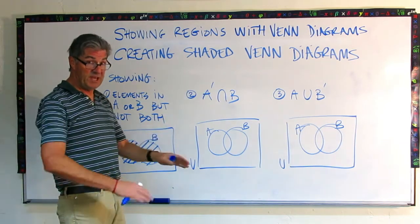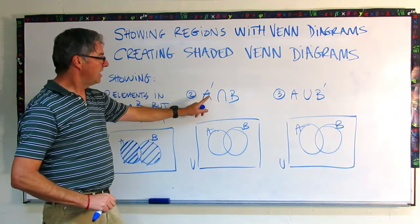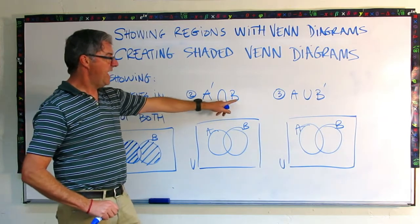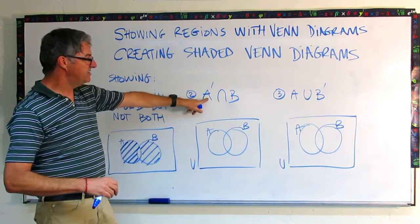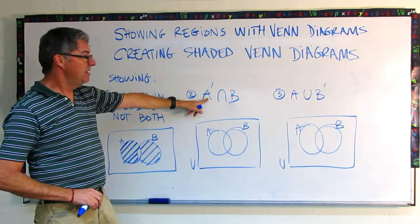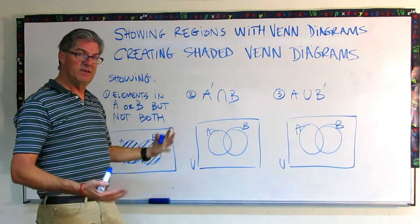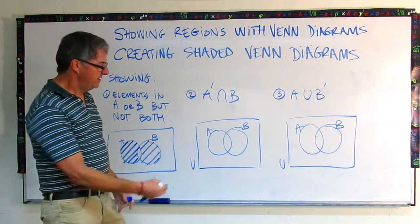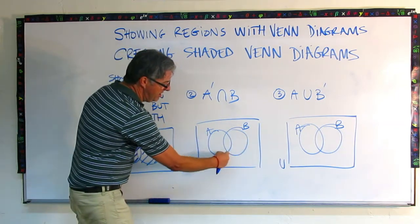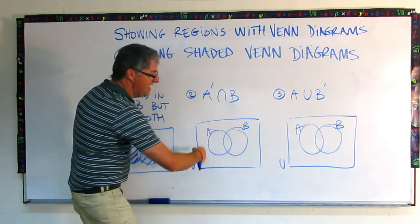This one's a little more complicated. Just give it to you in notation. The intersection of the complement of A and B. So it has to be all the things that are not in A that are also in B.